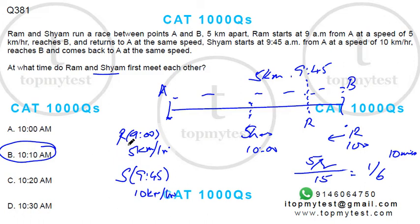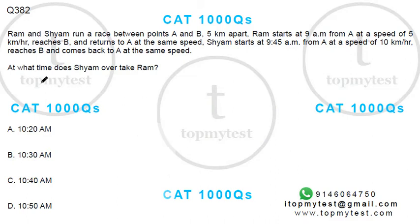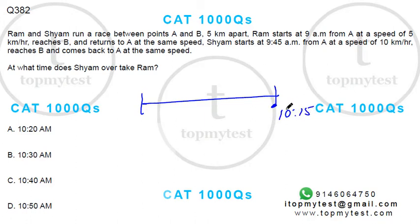For the second part — what time does Shyam overtake Ram — Shyam starts at 9:45 and takes half an hour to reach B, so at 10:15 he would have reached point B. Now Ram is somewhere before B on his return. Ram has been running for one hour and fifteen minutes, covering five kilometers plus one-fourth of five, which is five-fourths kilometers from B.